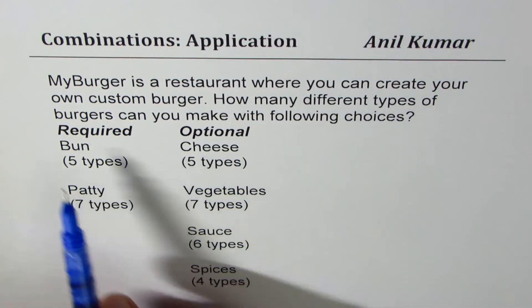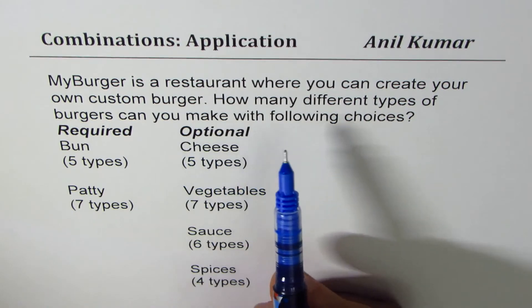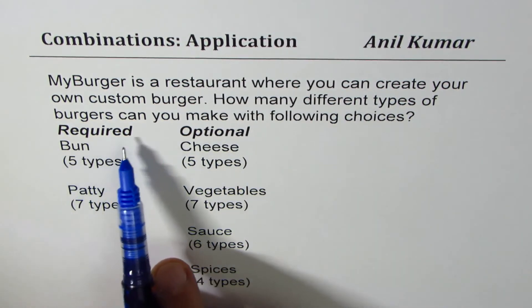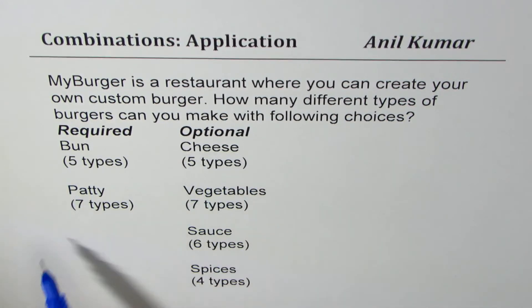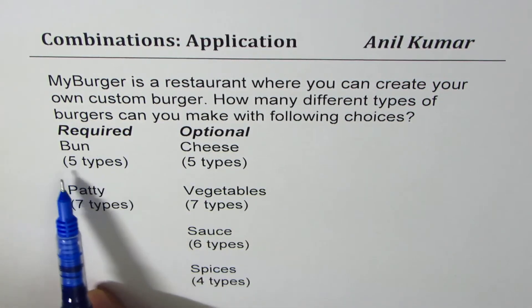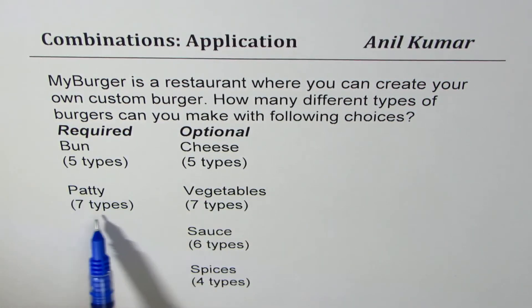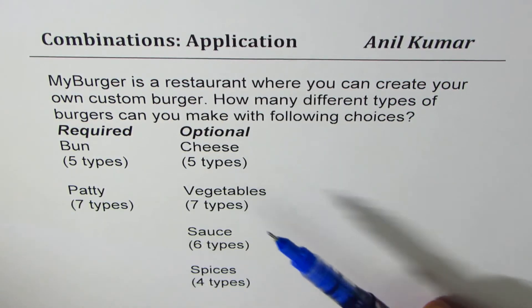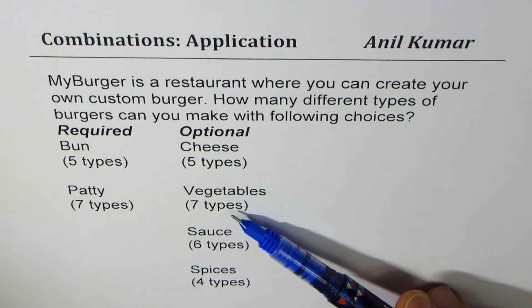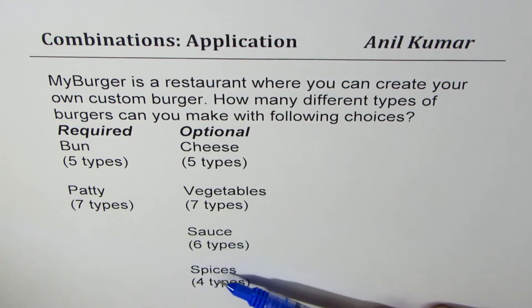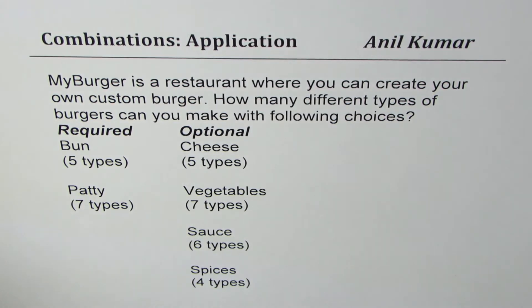Here is a practice question for you of a similar kind. 'My Burger' is a restaurant where you can create your own custom burger. How many different types of burgers can you make? For required items: buns — five types, patty — seven types. For optional items: cheese — five types, vegetables — seven types, sausages — six types, spices — four types.